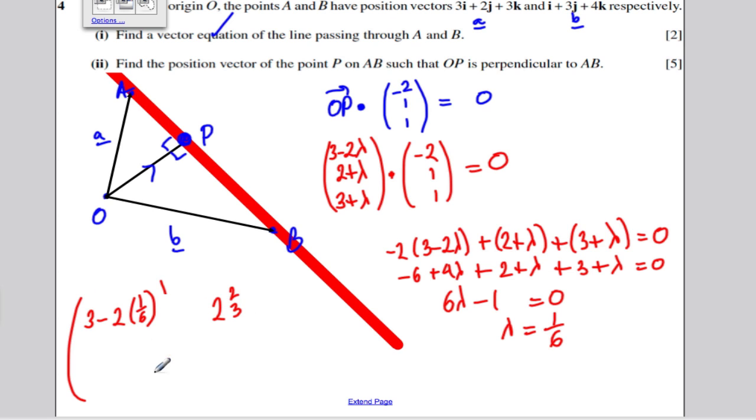The J component, we're going to have 2 plus lambda, which is 2 plus 1/6, which is 2 and 1/6. And we're going to have 3 plus lambda, which is 3 plus 1/6, which is 3 and 1/6. This is the position vector P, such that OP meets AB perpendicularly.